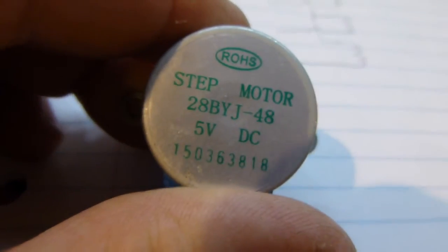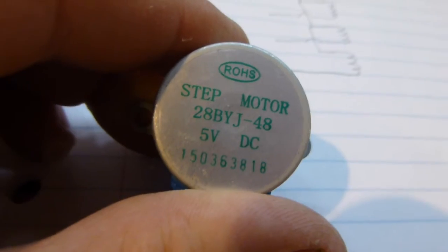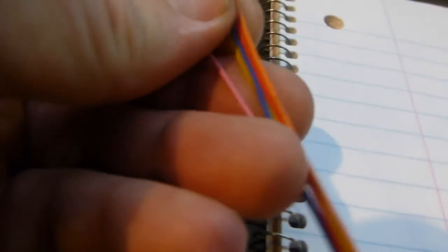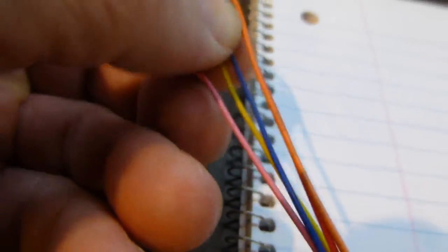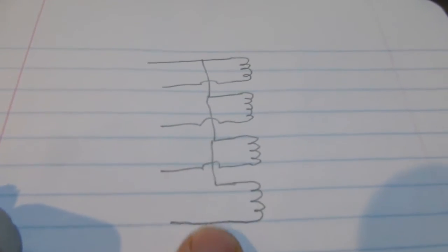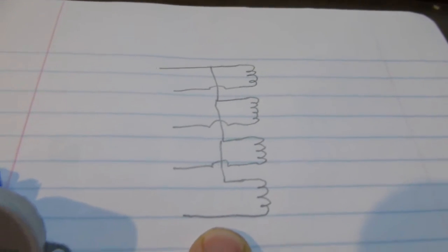The stepper motor, if you just look there, it says that it's designed to run on 5 volts. This is a 5-wire stepper motor, and if you look around online you'll find that generally those things are wired like this. This is called a unipolar stepper motor.